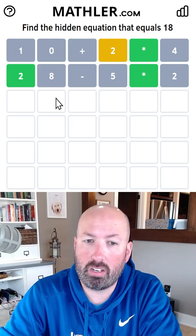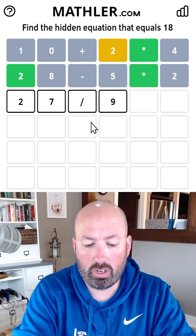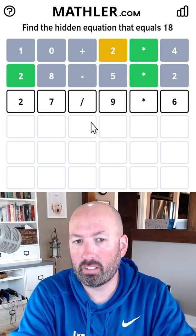What if we multiply by 6, and we end up with something that's 27 divided by 9? That would be 3 times 6. That seems good. Let's go with that.